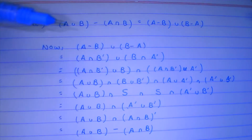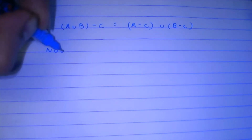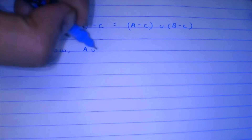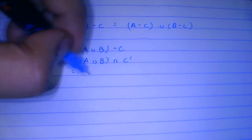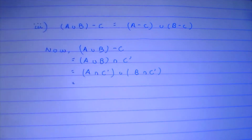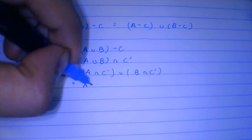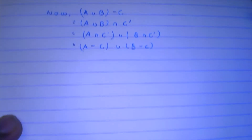Moving on to the third one: A union B minus C is equal to (A minus C) union (B minus C). Taking the LHS: (A union B) minus C. By definition, this is (A union B) intersection C complement. Applying the distributive law: (A intersection C complement) union (B intersection C complement). By the very definition of symmetric difference, this is (A minus C) union (B minus C), and we have proved this one.